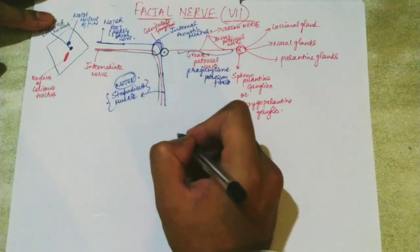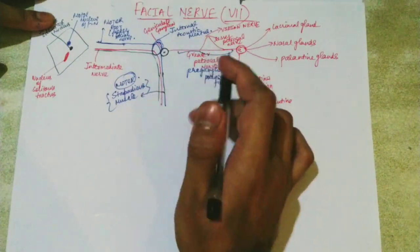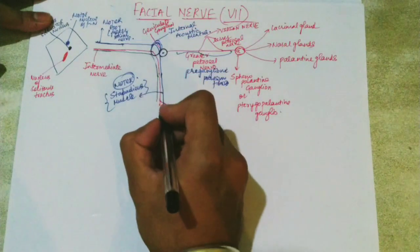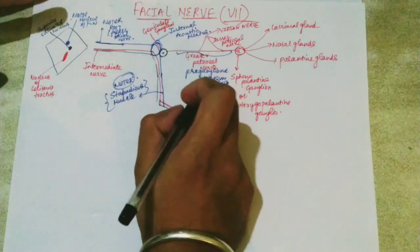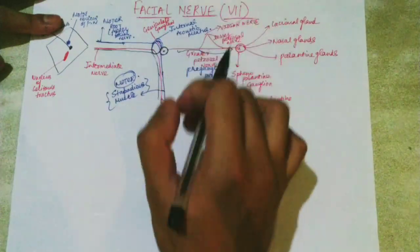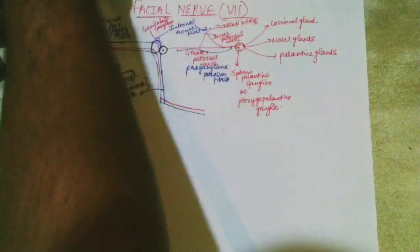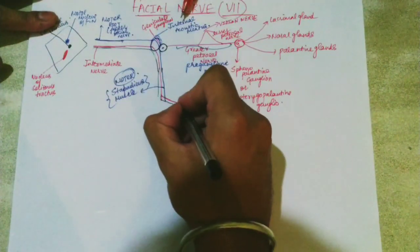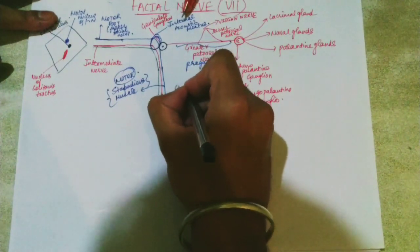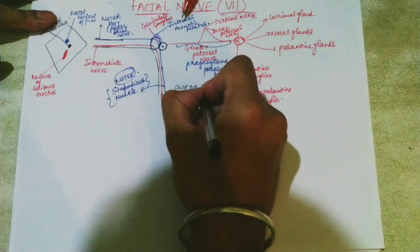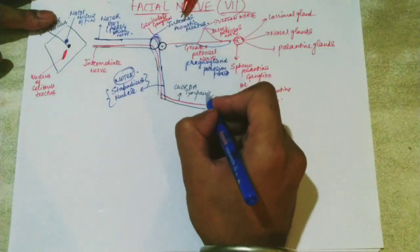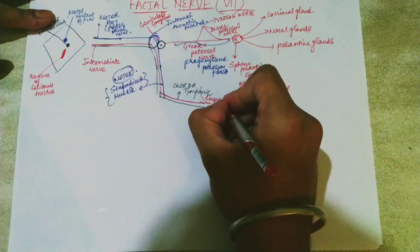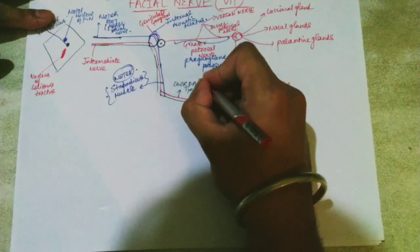Before exiting from the cranium, the nerve gives another branch called the chorda tympani, which contains sensory fibers and parasympathetic fibers. The greater petrosal nerve contains only parasympathetic fibers, while the chorda tympani contains both. At the level of the infratemporal fossa, the chorda tympani is joined by the lingual nerve.